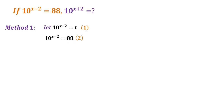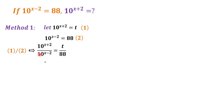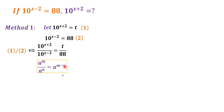So we divide equation 1 by equation 2. We have 10 to the power of x plus 2 over 10 to the power of x minus 2 is equal to t over 88. Then we apply the rule: a to the power of m over a to the power of n is equal to a to the power of m minus n.